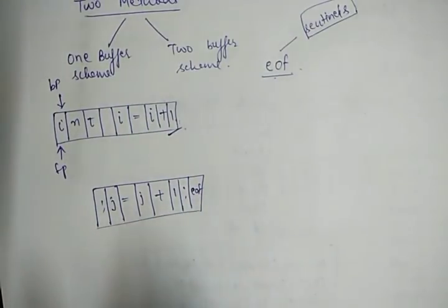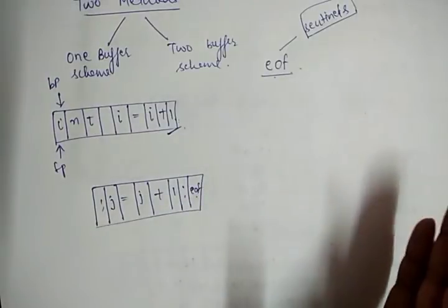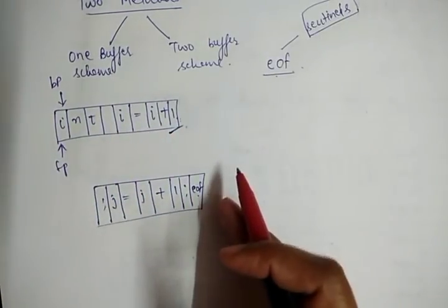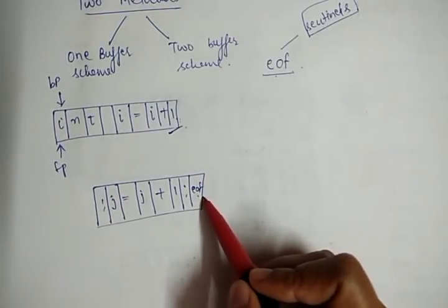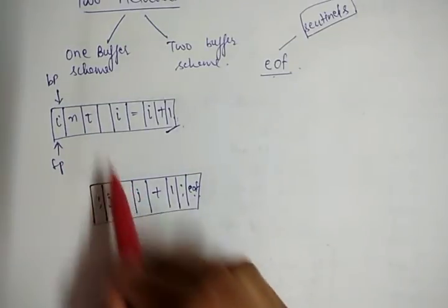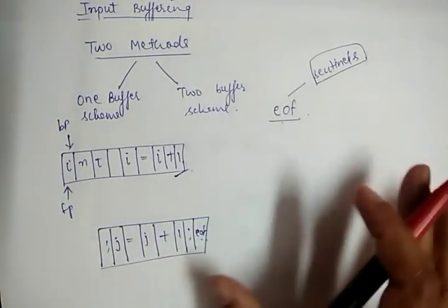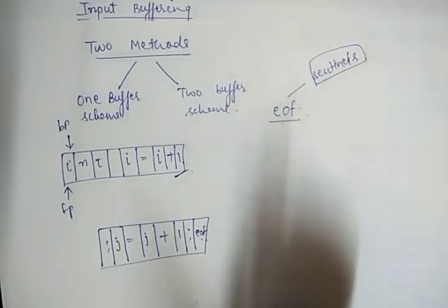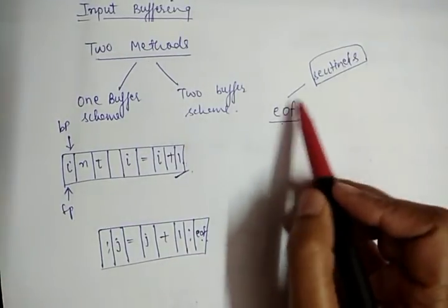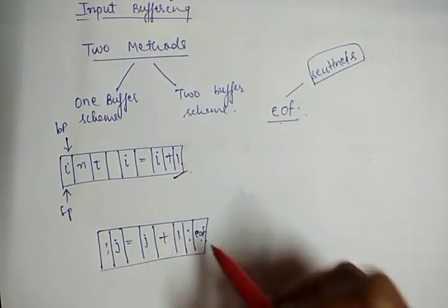When the forward pointer encounters the first EOF, it recognizes this as the end of the first buffer, and filling of the second buffer starts automatically. Similarly, when the second buffer's EOF is reached, it indicates the end of the second buffer. Both buffers are filled alternately until the end of the input program and the stream of tokens is fully identified. Sentinels are the input string or character sequence, represented by EOF, placed at the boundary of each buffer.